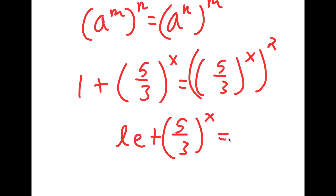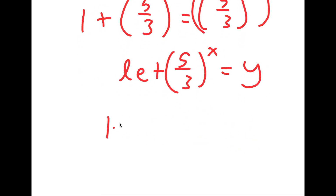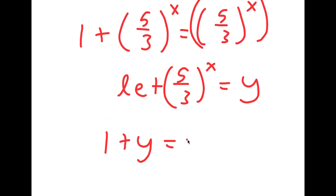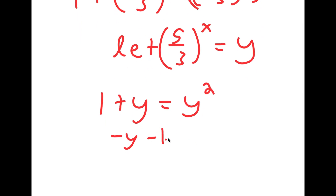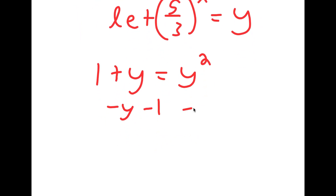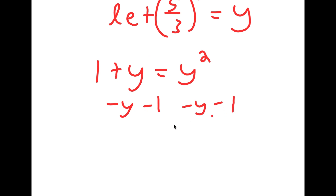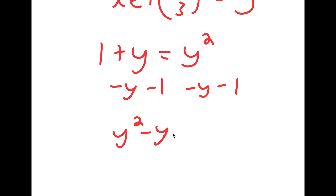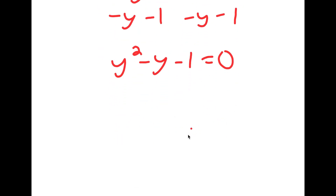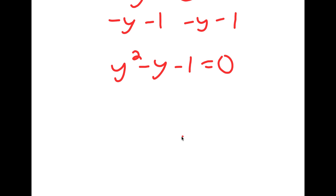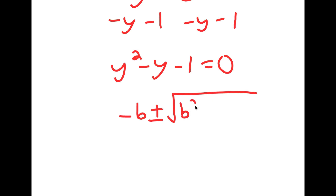Now I'm going to let 5 over 3 to the power of x equal the variable y. So I get 1 plus y is equal to y squared. And if I subtract y and 1 on both sides, I get y squared minus y minus 1 is equal to 0, so I get a quadratic equation.